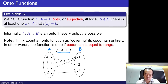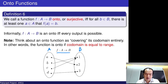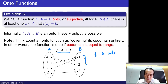Next, we are going to talk about onto functions. A function f from set A to set B is an onto function, or sometimes we call it surjective, if and only if for every element b in set B, there is at least one element a in set A such that f of a is equal to b.